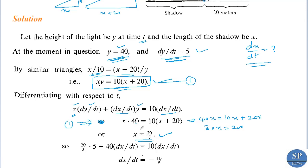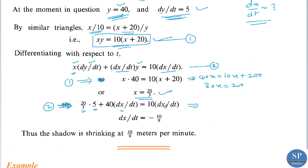Now we have x equals 20 by 3, y equals 40, and dy by dt equals 5. From the differentiated equation, substituting these values: 20 by 3 into 5 plus 40 into dx by dt equals 10 into dx by dt. Rearranging gives 30 dx by dt equals minus 100 by 3, so dx by dt equals minus 100 divided by 90, that is minus 10 by 9. Therefore the shadow is shrinking at 10 by 9 meters per minute.